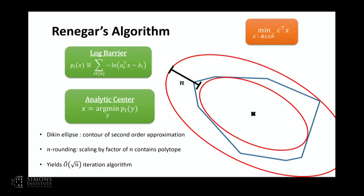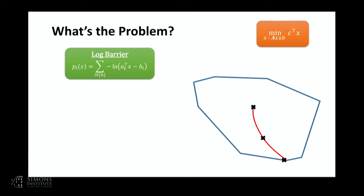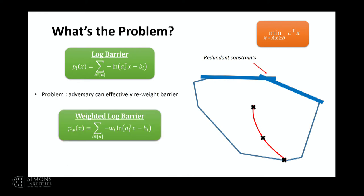For the logarithmic barrier for the linear program — where we take a point, look at the distance to every constraint, take the log of that distance, and sum over all constraints — the center under this barrier is called the analytic center of the polytope. The log barrier gives an n-rounding of the polytope: if I take the second-order approximation around the center and scale up by a factor of n, I get an ellipse that fully contains the polytope. This n is roughly what we take the square root of to get the number of iterations in an interior point method.